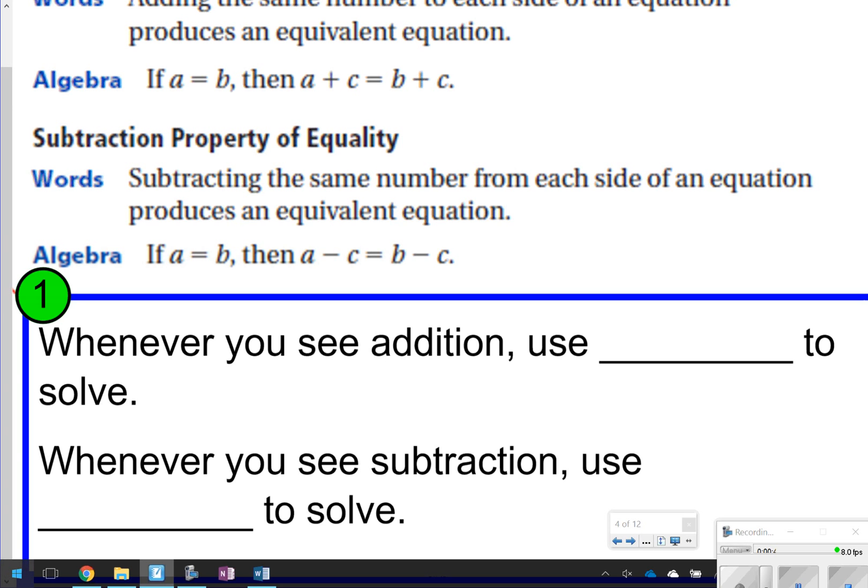What we're trying to do is kind of show that, so whenever we see, and this is the part that you will write down here in the blue box, whenever you see addition, you're going to use subtraction to solve, and whenever you see subtraction, you're going to use addition to solve. So that's just going to basically undo any operation that we see to solve for a variable. Go ahead and take time now to pause the video and write down what's in the blue box, fill in both of those blanks. Once you're done, click play so we can move on.